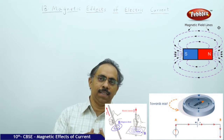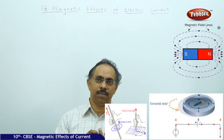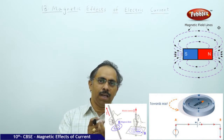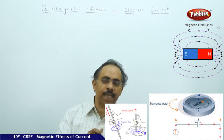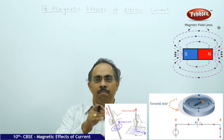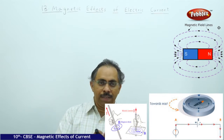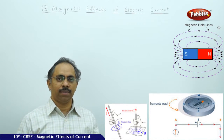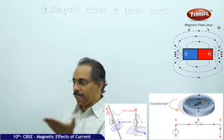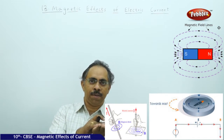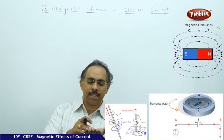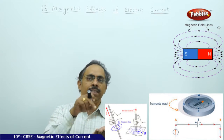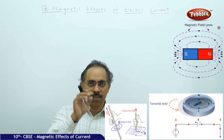An ordinary compass has a small magnetic needle which is suspended freely and is free to rotate horizontally. If I keep the compass horizontal and change its orientation in different directions, irrespective of how you handle the compass, the north pole of the needle will always point towards the geographic north.